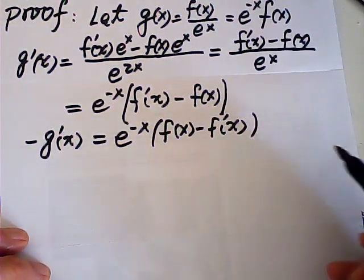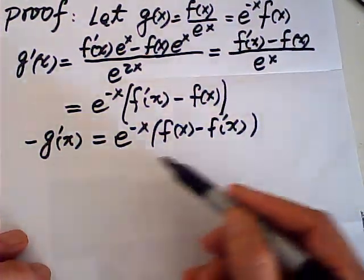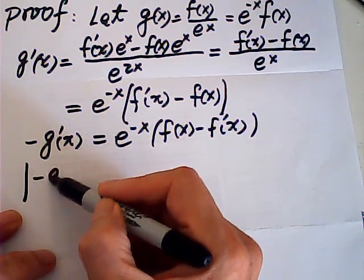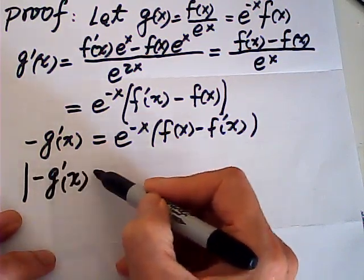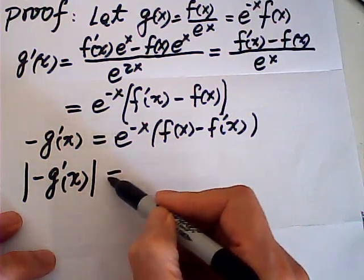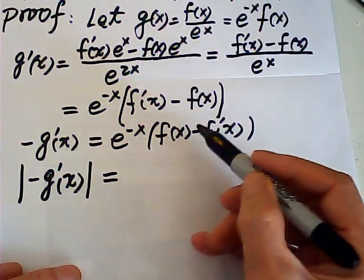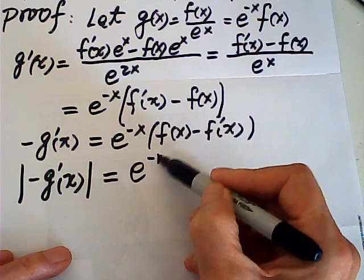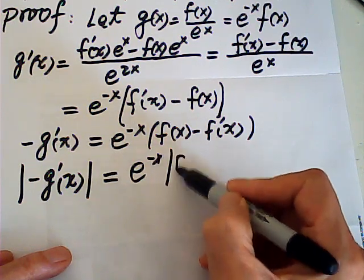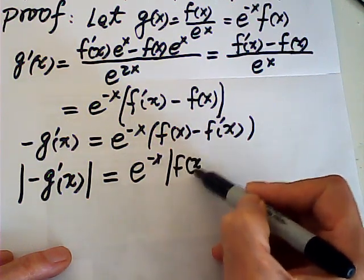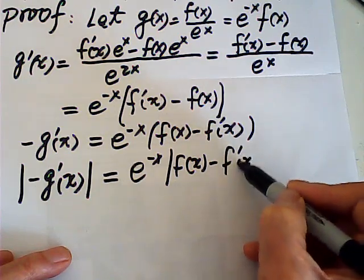Then I take an absolute value, absolute value g prime of x is equal, this is always positive. Therefore, we just take the absolute value, this is equal to absolute value f of x minus f prime of x.